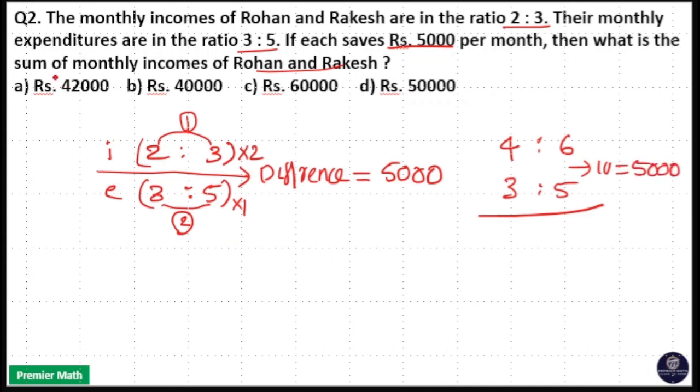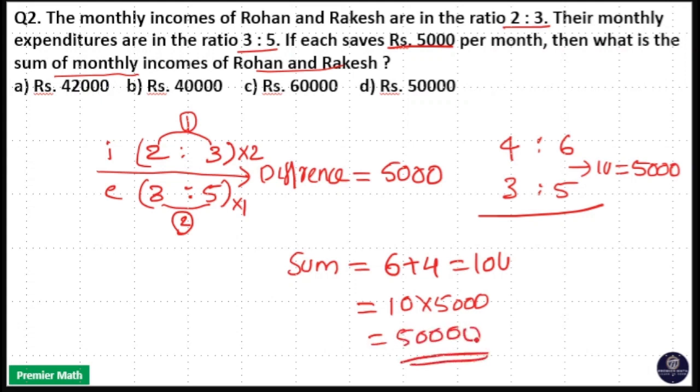The sum of monthly incomes of Rohan and Rakesh equals 6 + 4 = 10 units. That is 10 × 5000 = Rs. 50,000. Option D is your answer.